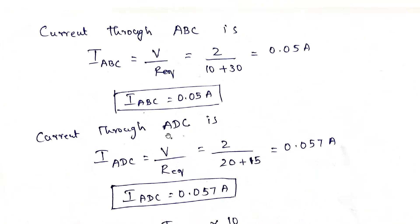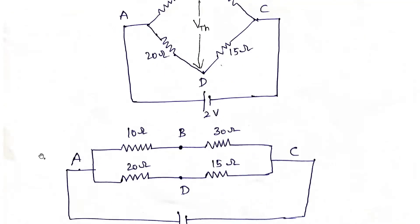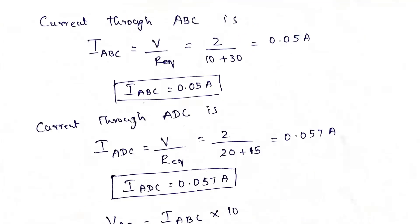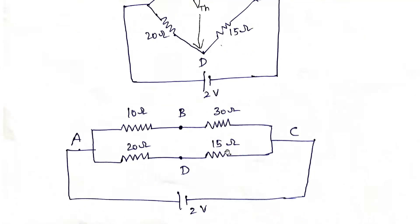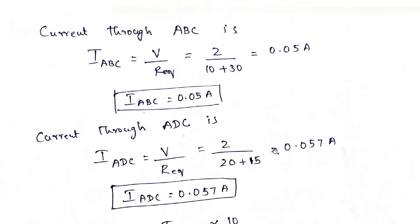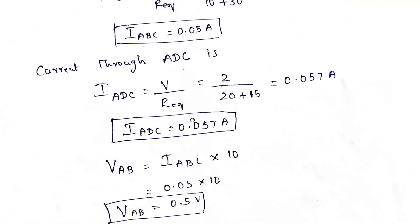Now we need to find out what is the current through ADC. IADC is equal to V divided by R equivalent — V is 2 volts divided by R equivalent. It is 20 ohms and 15 ohms are in series. So that gives us 0.057 amperes. So IADC is 0.057 amperes.